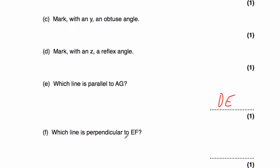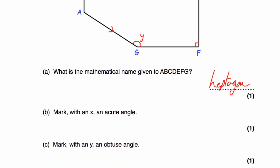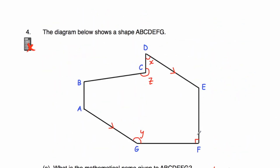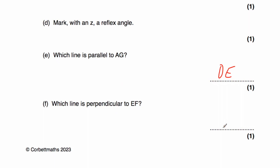Part F says: which line is perpendicular to EF? Perpendicular to EF means it meets or crosses at 90 degrees. EF is this line, and we've got the right angle marked here, so EF and FG are perpendicular. You could call it GF. This line FG or GF — they are perpendicular to EF because of the right angle that's marked in.